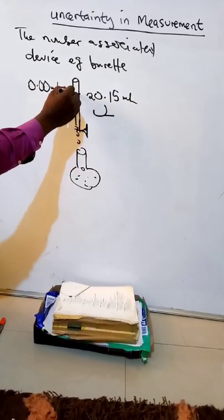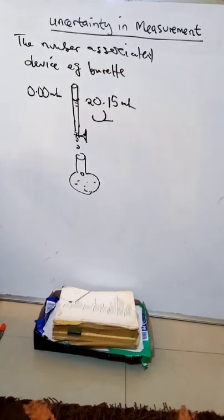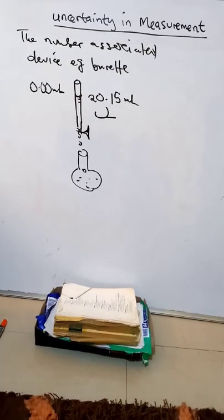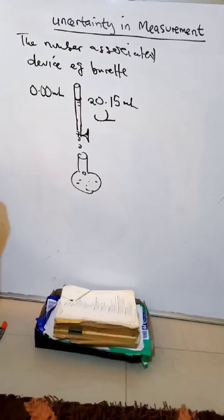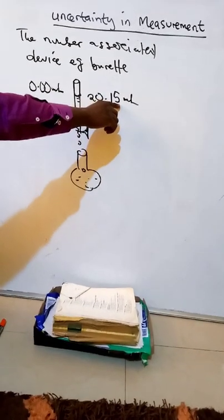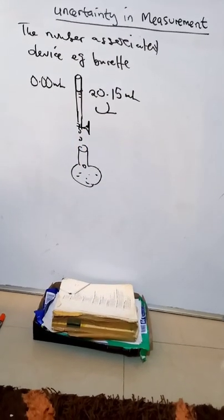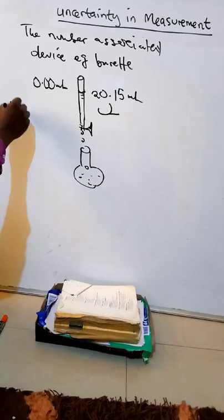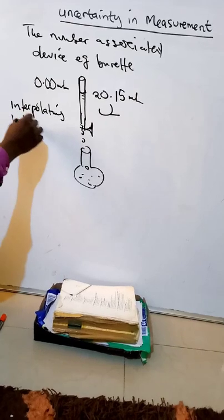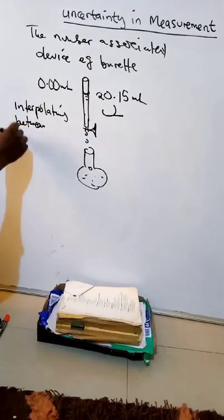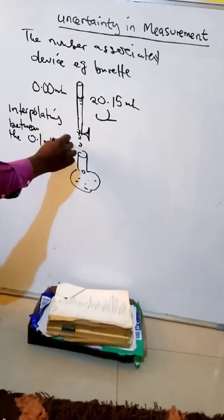As you can see, it makes this curve. The bottom meniscus is here, so this is the volume shown there. Note that the last number must be estimated — it must be estimated by interpolating between the 0.1 milliliter marks.